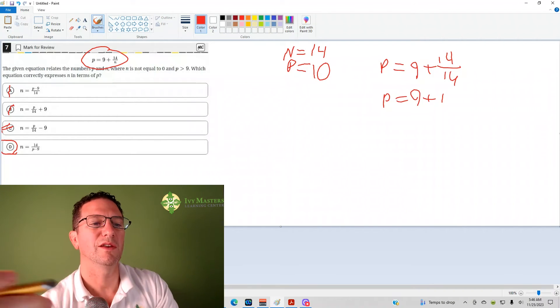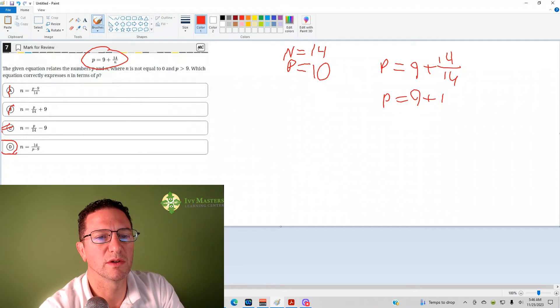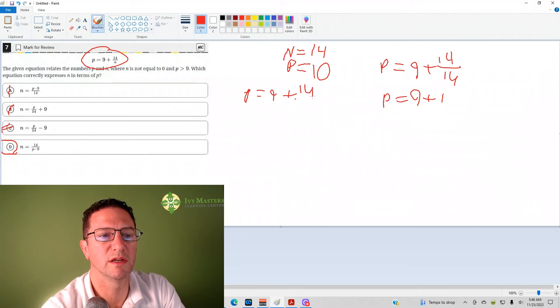Now, you could have also done this algebraically, of course. So I've got p equals 9 plus 14 over n. Then what I can do is subtract 9 from both sides and I get p minus 9 equals 14 over n.